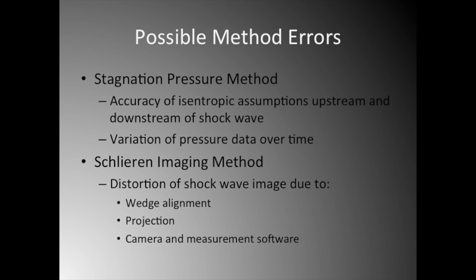To determine which method is more accurate in relating the Mach number to the throat area, we need to look at some possible method errors. The first issue with the stagnation pressure method is the accuracy of the isentropic assumptions upstream and downstream of the shockwave. We assume that entropy remained constant upstream and downstream, with the only losses occurring at the shockwave itself. In reality, things such as friction contribute to entropy changes upstream and downstream of the shockwave. Another issue is the variation of pressure data over time. P0A and P0B will not remain constant because the flow changes, so we had to determine what values of P0A and P0B to use for our Mach number calculations.